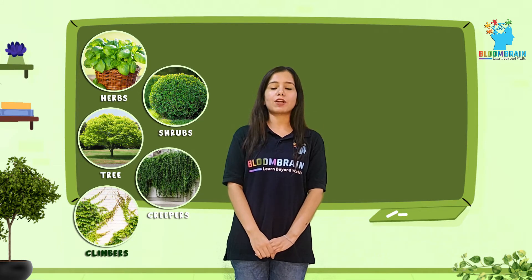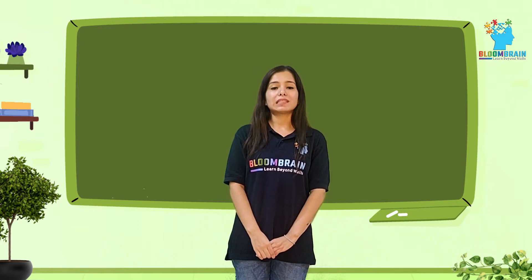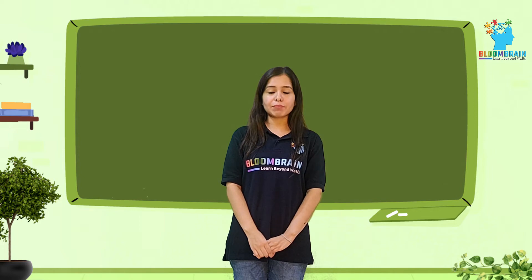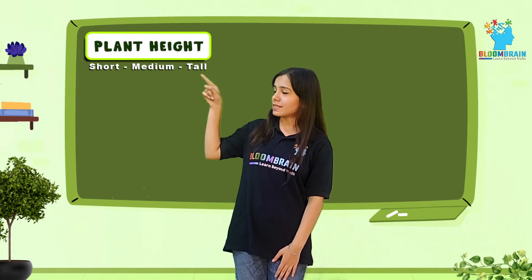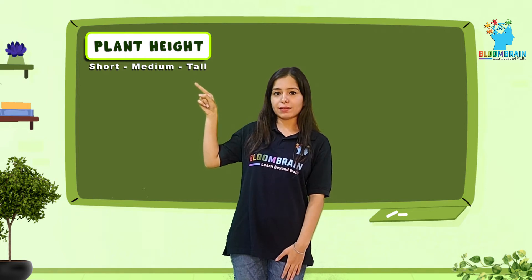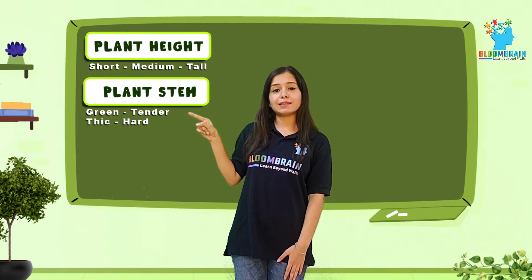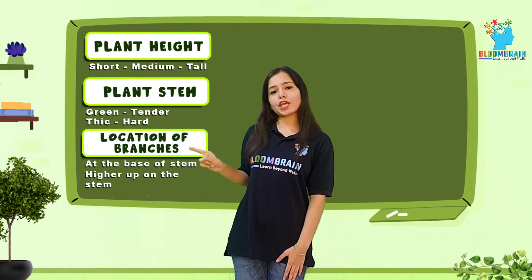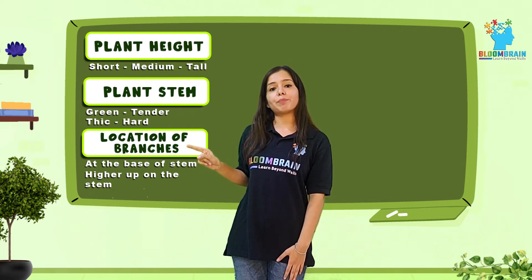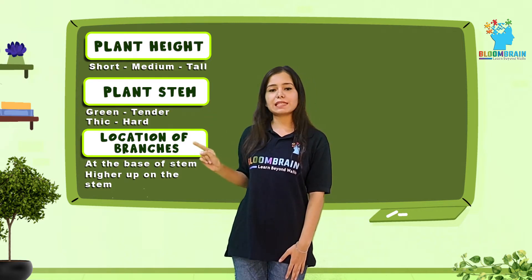We will study about each one of them in detail. First, we will study herbs, shrubs, and trees, and we will characterize them according to three aspects so that we can differentiate them easily. The three aspects are: plant height, which can be short, medium, and tall; plant stem, which can be green, tender, thick, and hard; and location of branches, which can be either at the base of the stem or higher upon the stem.